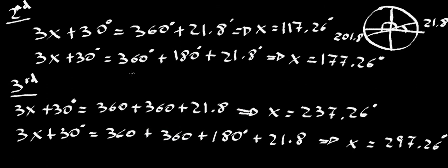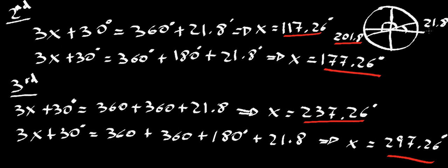So the solution is going to be two points per turn. We have six angles in total: the first two from the first turn around the circle, two more from the second turn, and two from the third turn.